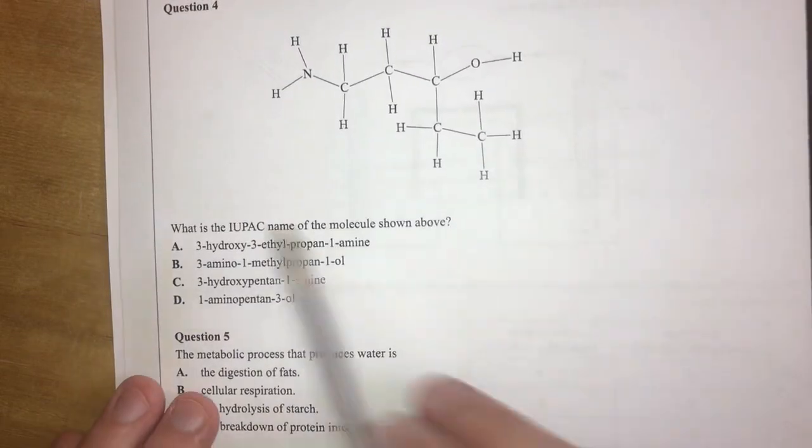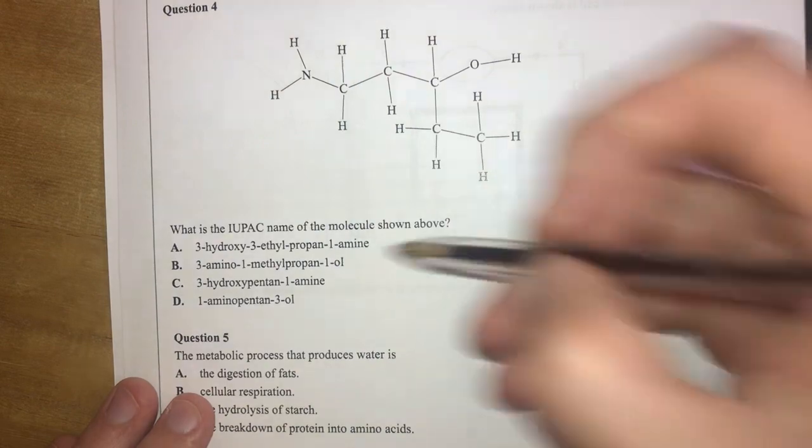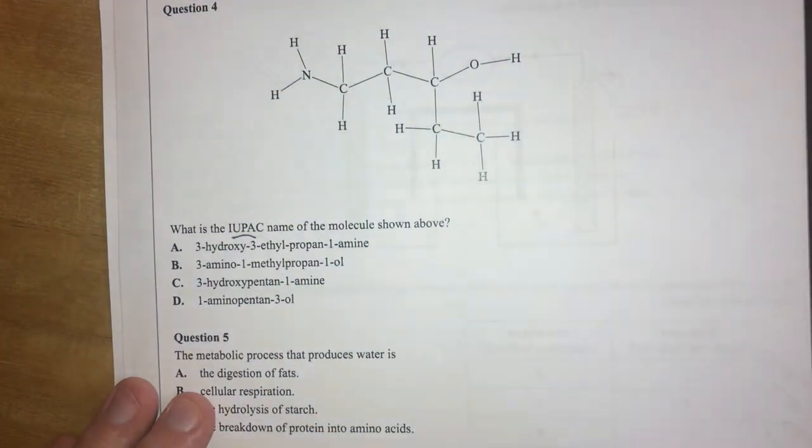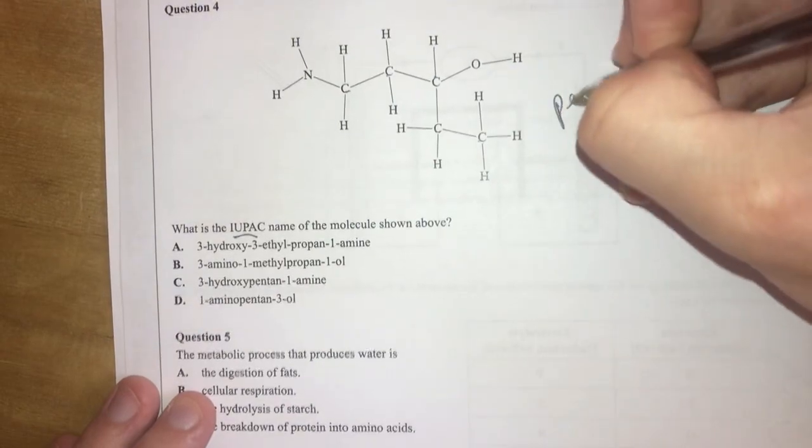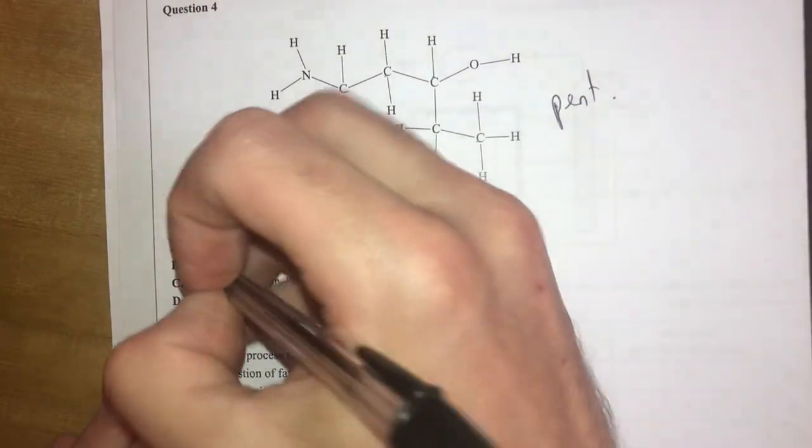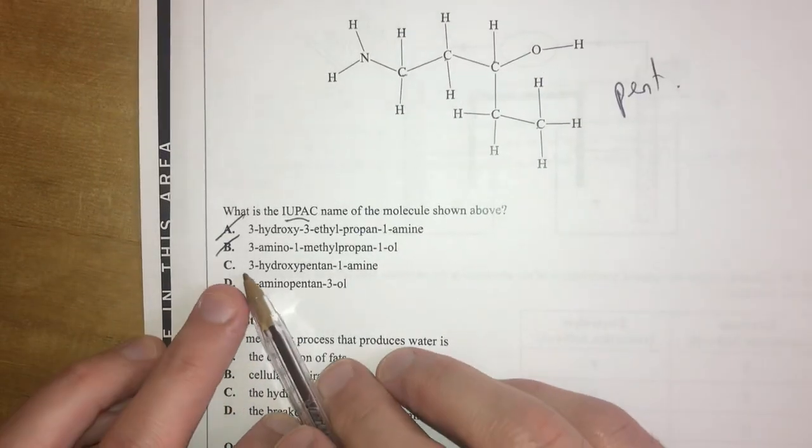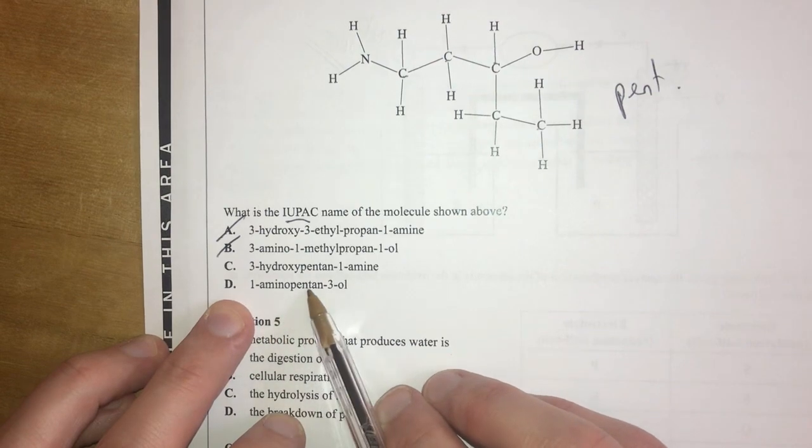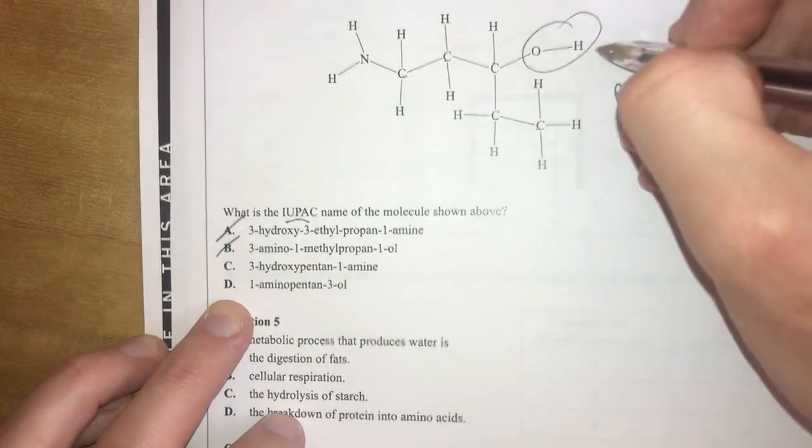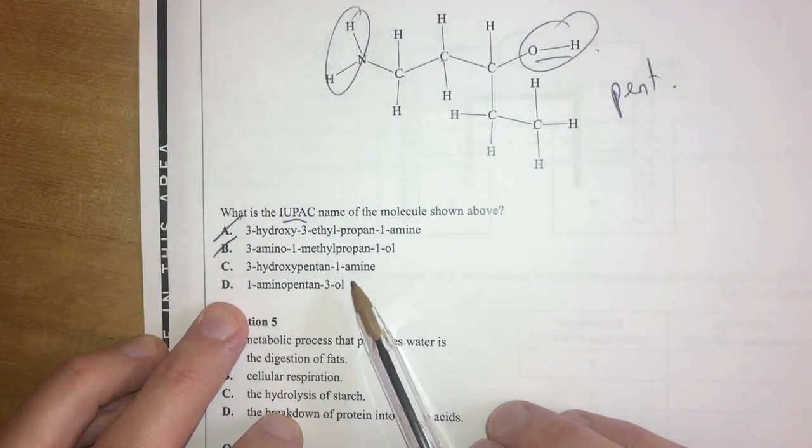Question four. What is the IUPAC name for the molecule shown above? Here it is. So IUPAC is about looking for the longest chain, first of all. One, two, three, four, five. So it's going to be pent something. So therefore, prop and but, we can cross those two out. And let's have a look at what the difference is here. We've got 3-hydroxypentan-1-amine and 1-aminopentan-3-ol. So we've got a hydroxyl group and we've got an amino group. Sorry, yeah, amino group.